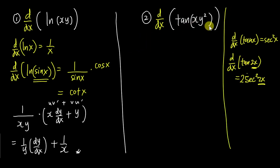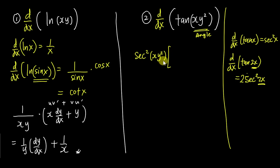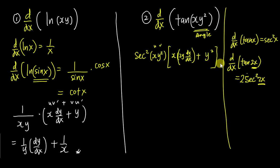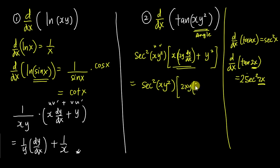Now for this question, xy² is the angle, so differentiating tan gives sec²(xy²) with the angle copied. Then I need to differentiate the angle xy² using the product rule — u is x and v is y². Copy x and differentiate y², which gives 2y·(dy/dx). Plus copy y² and differentiate x, which gives 1. So the answer is sec²(xy²) multiplied by (2xy·(dy/dx) + y²).